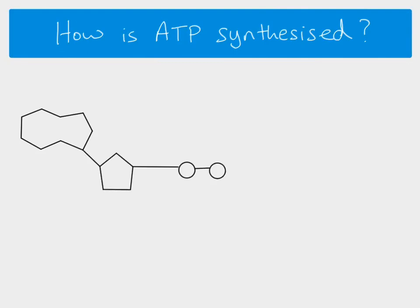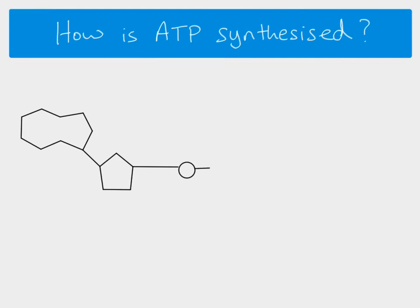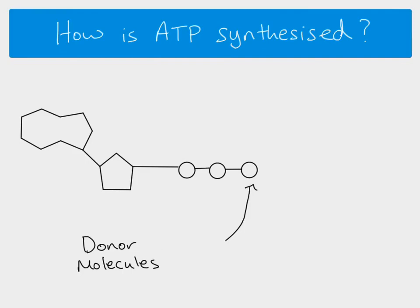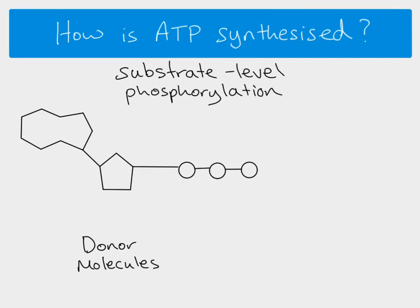If we've got our ADP molecule, we know we need to add an inorganic phosphate — so that inorganic phosphate needs to come from somewhere. We need donor molecules: other molecules which are able to donate an inorganic phosphate group, which then gets added onto ADP to make ATP. Using phosphate from a donor molecule is called substrate-level phosphorylation — phosphorylation because we are adding a phosphate group, and substrate-level because we take the phosphate from a substrate molecule.